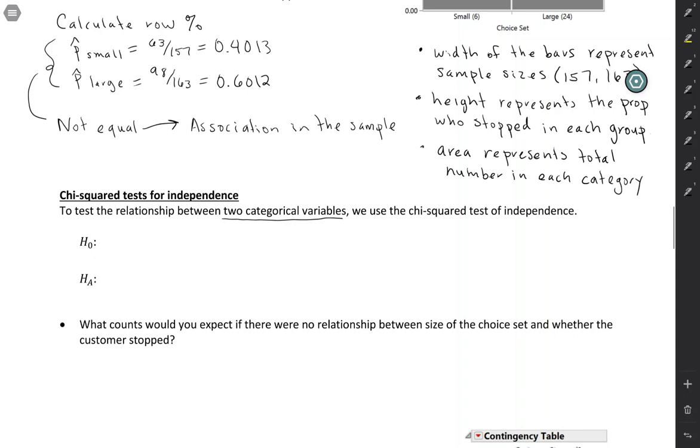The null hypothesis for chi-squared test of independence is that there is no relationship between the two variables. So if we put it in context here, going back to that jam choices context, the size of the choice set is not related to customers stopping. So whether they stop or not has nothing to do with whether they saw six choices of jams or 24.